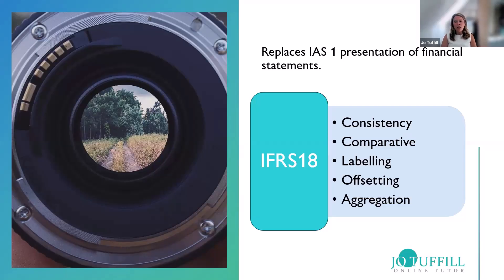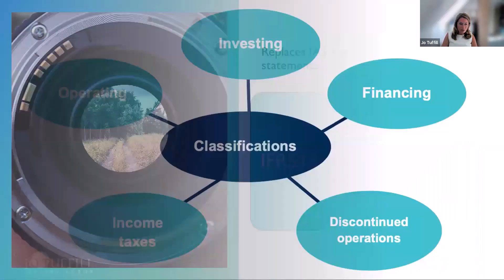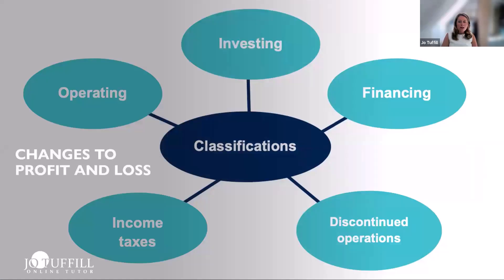IFRS 18 also covers when to classify something as current or non-current in the statement of financial position, and those requirements are very similar to what IAS 1 said. For the profit and loss, we now classify items as operating, investing and financing — terms already familiar from the cash flow statement. We also classify income taxes, and discontinued operations remains under IFRS 5.